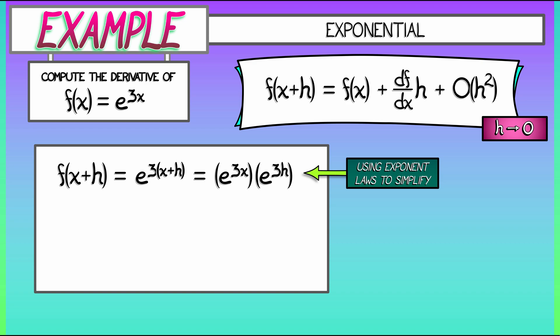Now, what does that give us? Well, we've got that e to the 3x out in front. And then what's left is e to the 3h in the limit as h goes to 0, we can expand that out using Taylor series. We can say that that is 1 plus 3 times h plus a bunch of other stuff that we're just going to put into a big O of h squared trash can.